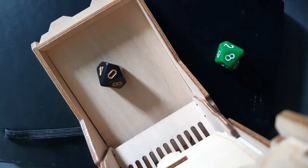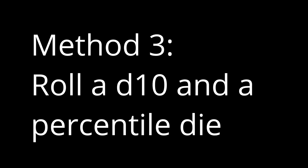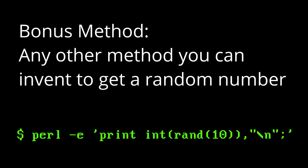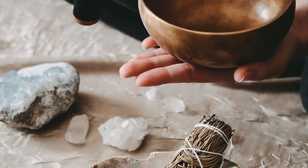An important term up front: d10 means a 10-sided die. To roll a d100, you can roll two d10 in succession, two different colored d10 rolled together, a percentile die and a d10 rolled together, or you can use any other way of generating a number between 1 and 100 — but this video is exclusively about rolling dice.